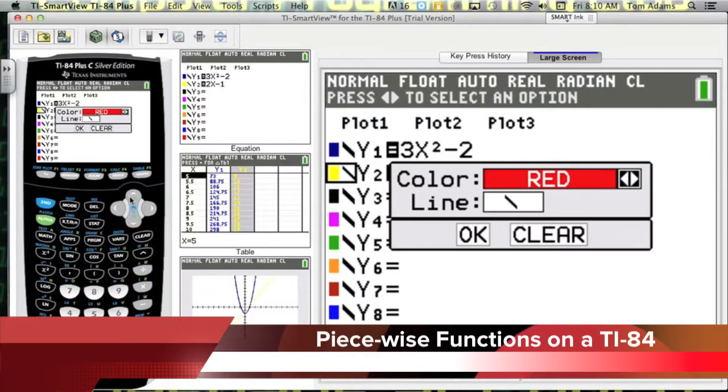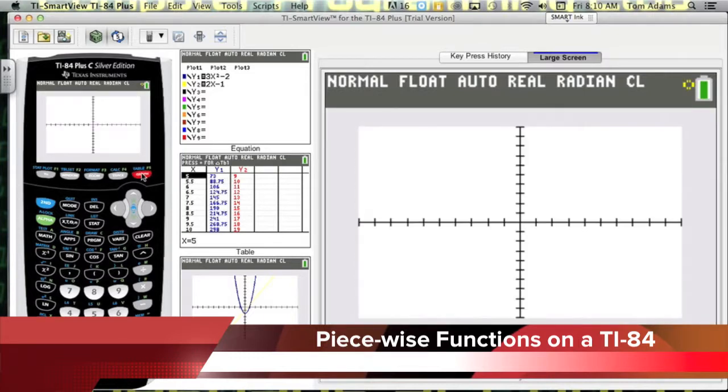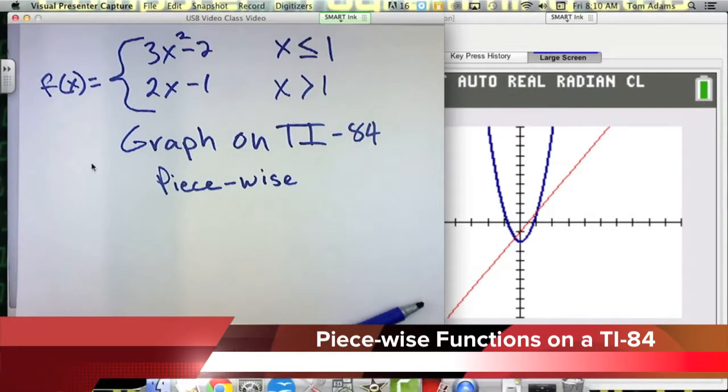Come down here, hit OK, and now when I hit graph, it should draw a red line. There it is. And so as you can see here, this is not exactly the piecewise function that I have defined for my actual function.